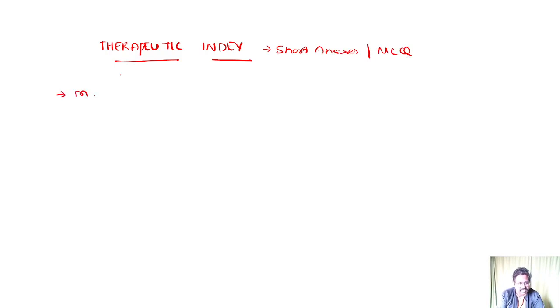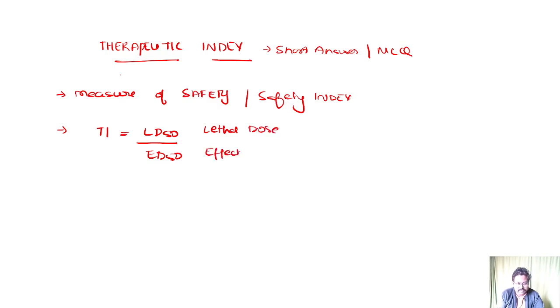Therapeutic index is basically a measure of safety. You can call it as a safety index. So how do you measure? There is a formula for the therapeutic index: it is equal to LD50 by ED50. LD is the lethal dose, ED is the effective dose.